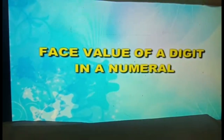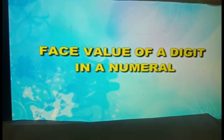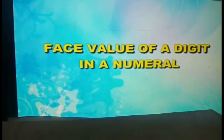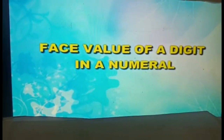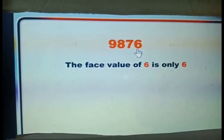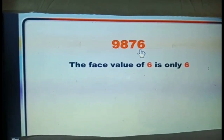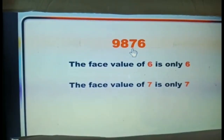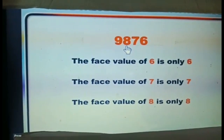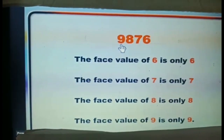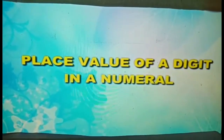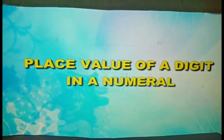Next is the face value of a digit in a numeral. The face value of a digit in a numeral will remain the same at whatever place it stands — there will be no change in the value. Thus, in 9876: the face value of 6 is 6, the face value of 7 is 7, the face value of 8 is 8, and the face value of 9 is 9.